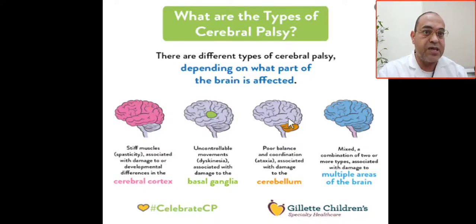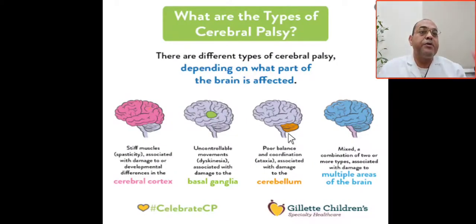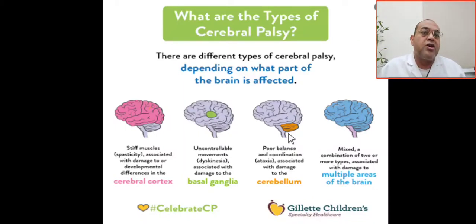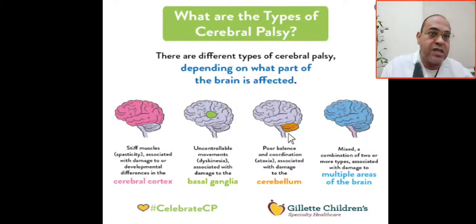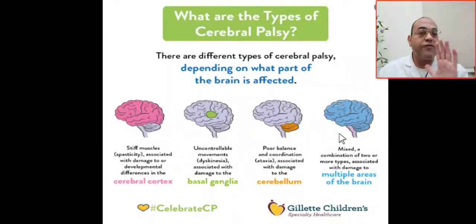The third type involves the cerebellum. If you see here, this is the ataxic type. Ataxic CP is characterized by poor balance and incoordination, associated with damage to the cerebellum.